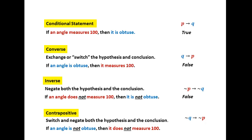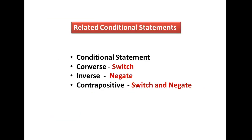Let's look at the truth value of the contrapositive: if an angle is not obtuse, then it does not measure 100°. I cannot think of a single counterexample to make that false, so this is indeed true. To summarize: the converse is just switching, the inverse is negating, and the contrapositive is switching and negating. I'll see you guys in class.